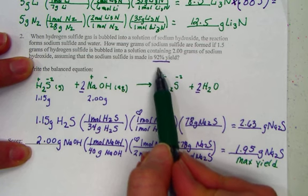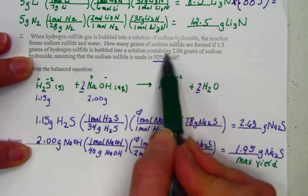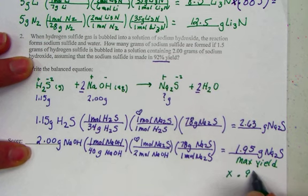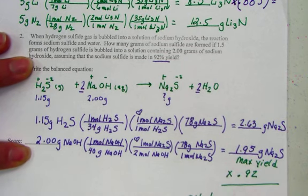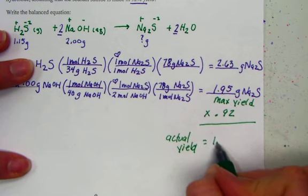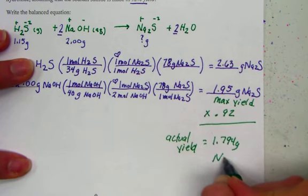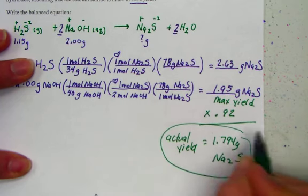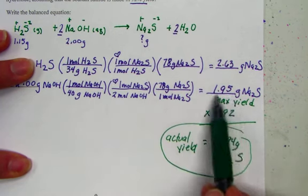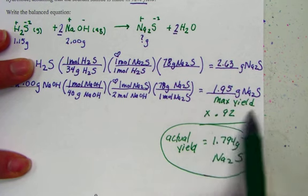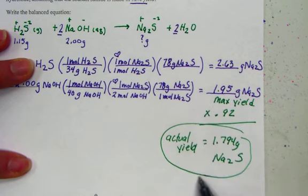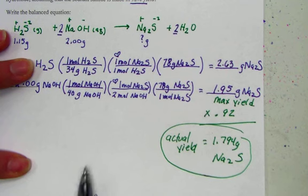But it's not 100% efficient, it's only 92% efficient. We have to take 0.92%, 92%, type that in as times 0.92, and the actual yield would be reported as 1.794 grams of sodium sulfide. We did a limiting reagent problem, decided that the smaller of our two answers would be the maximum yield. Taking 92% of that smaller answer showed us the maximum yield, 1.794 grams of sodium sulfide.